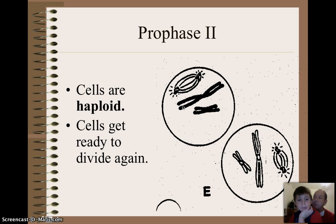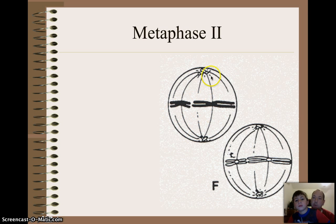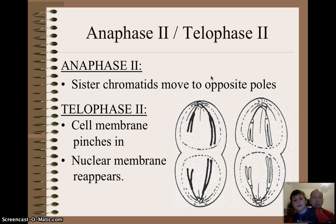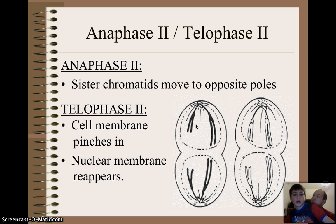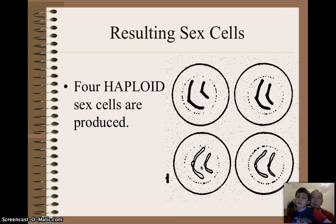And now the cells are getting ready to divide again. So right after prophase — find your partner — we line up in metaphase. Again, these chromosomes are going to get pulled apart by microtubules. It looks just like mitosis. And then we end up with anaphase II, where the actual separation of the chromosomes happens. And then telophase is when the cell membrane pinches in, the nuclear membrane reappears, and then we end up with 4 haploid cells.